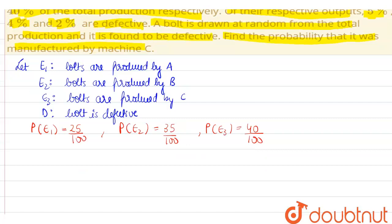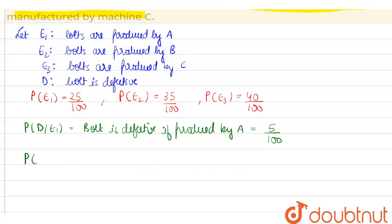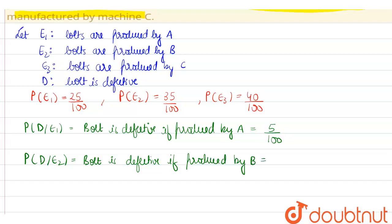Moving on, we find the conditional probabilities. The probability that the bolt is defective if produced by A — that is, probability of D given E1 — is 5 percent, which is 5 by 100. The probability of D given E2, that is the bolt is defective if produced by B, is 4 percent.